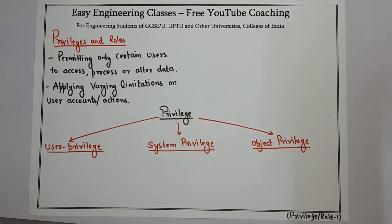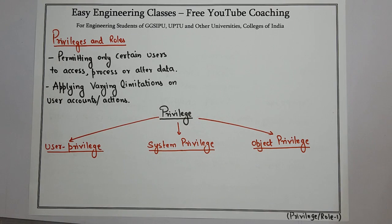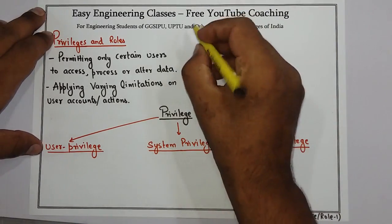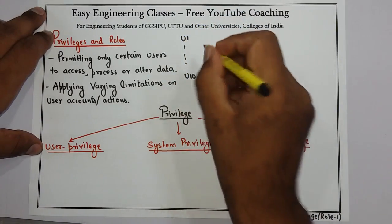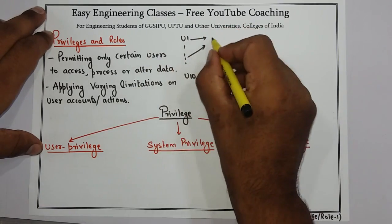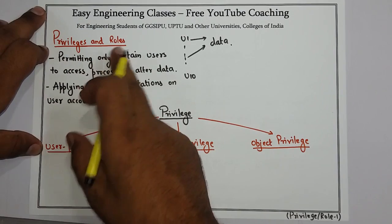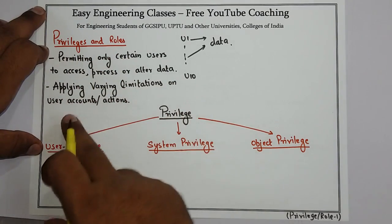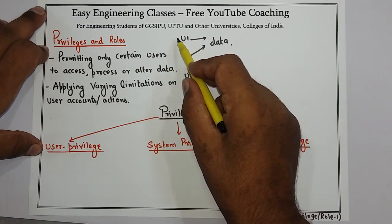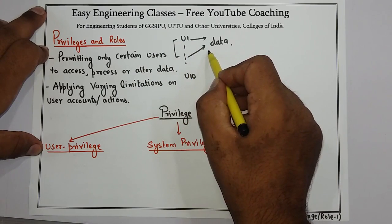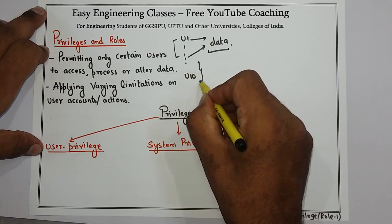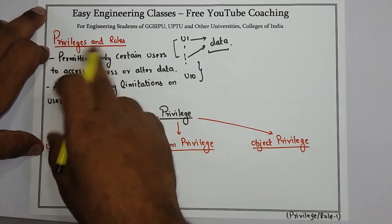Hello, today in this class we will see a very brief introduction about privileges and roles in Oracle Database. Privileges and roles are used to permit only certain users access or processing capability of data. For example, if there are 10 users from U1 to U10 and I want to permit only U1 and U2 to access data, I can do that with the help of privileges and roles. They are also used to apply varying limitations on user accounts and actions.